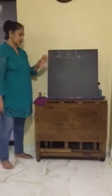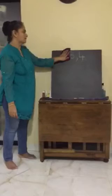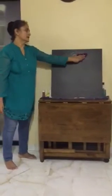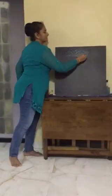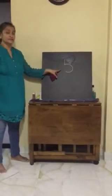Today we shall learn the next number after 4. That is number 5. Which number is it? Number 5 — a sleeping line, a standing line, and one jump. Number 5. Which number is this? Number 5.